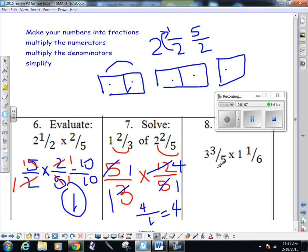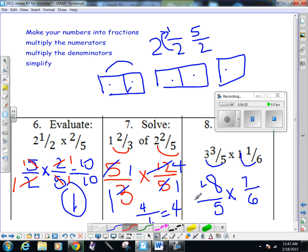And the last one, 18/5 times 7/6. Check my corners. 18 and 6 have a greatest common factor of 6. 18 divided by 6 leaves me with 3, 6 divided by 6 leaves me with 1. 7 and 5 are both primes, so they have nothing.